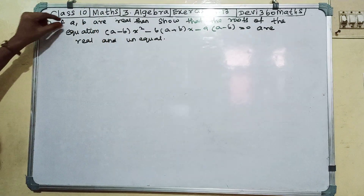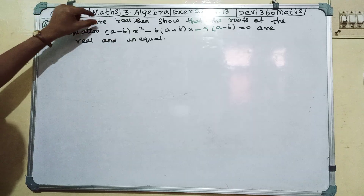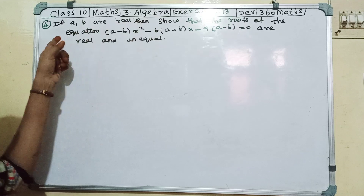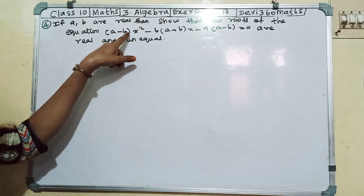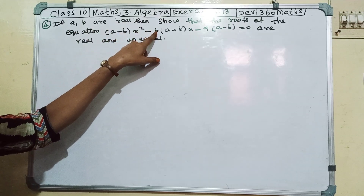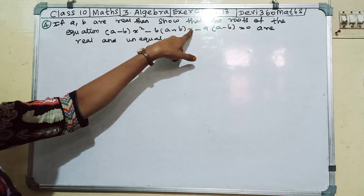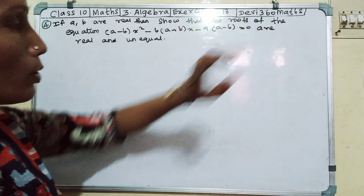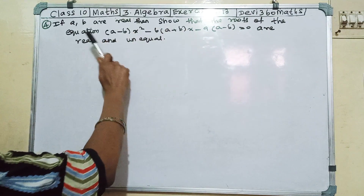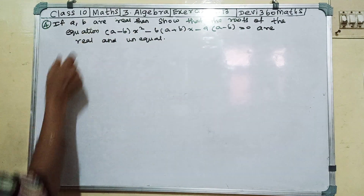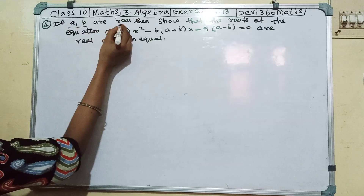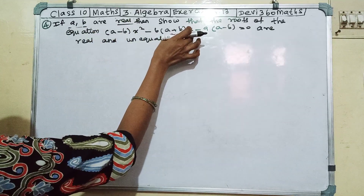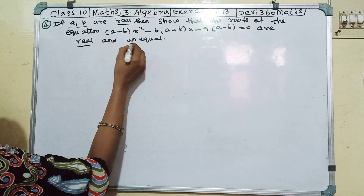The question is: if a, b are real, then show that the roots of the equation (a minus b)x squared minus 6(a plus b)x minus 9(a minus b) equals 0 are real and unequal. That means a and b are real, and we need to show the roots of the equation are real and unequal.